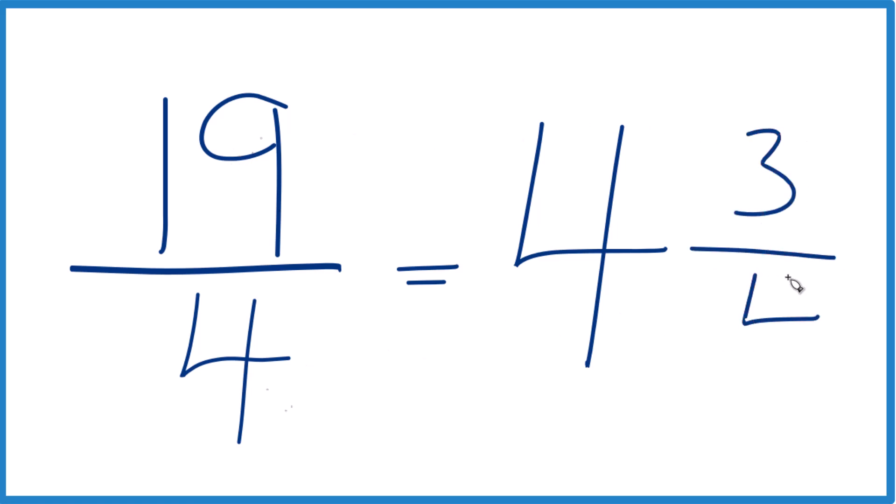We bring the 4 across, and 19 fourths, that's the same. The mixed number is 4 and 3 fourths, so these are equivalent. They're equal value.